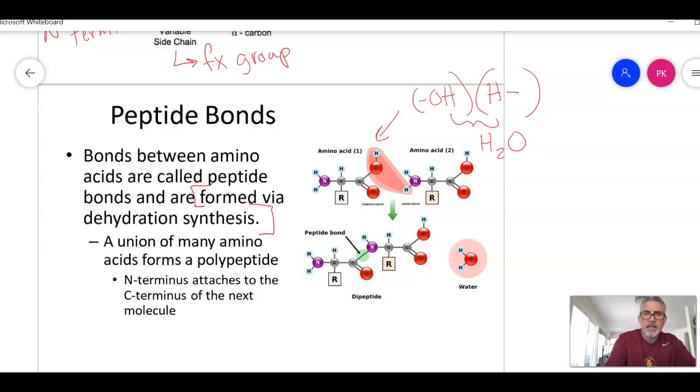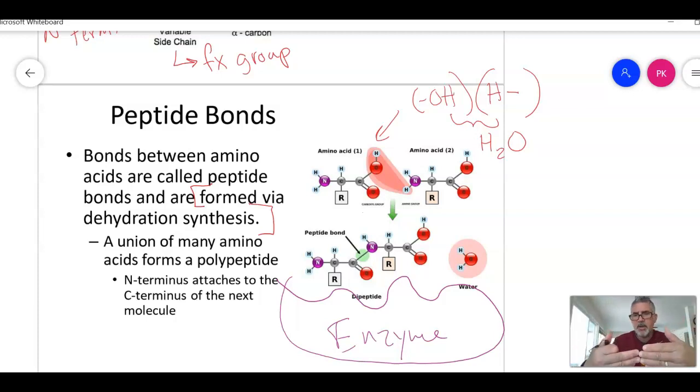All of this happens under the direction of enzymes. Enzymes work by holding the substrates in the correct position. Because they hold them in the correct position, they lower the energy necessary to keep them knocking into each other until they can form a bond. The N-terminus attaches to the C-terminus of the next one.